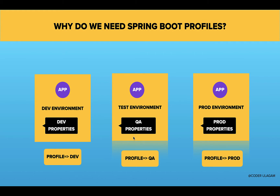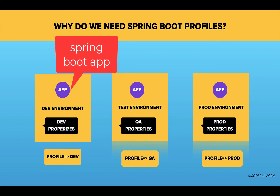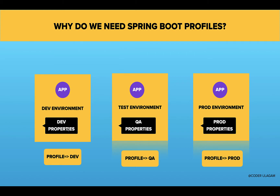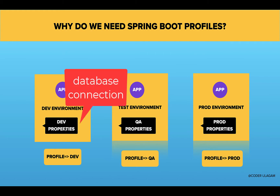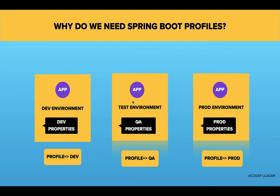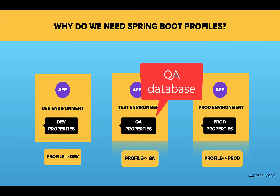Now we have the properties management. In the dev environment, you can use dev properties to connect a database or an external API and configure the dev properties. The dev properties contain dev environment endpoints. Similarly, if you go to the QA environment, you can use a separate properties file with QA environment database and REST endpoints.